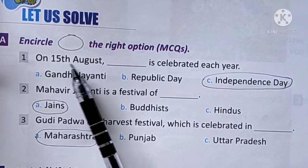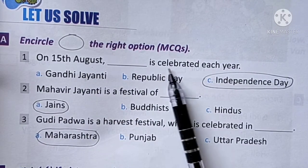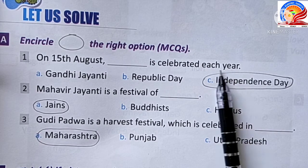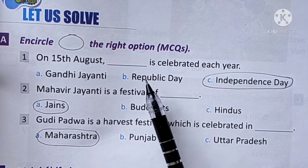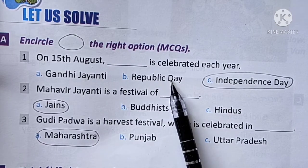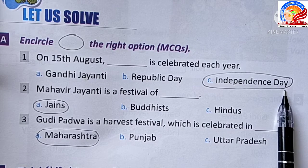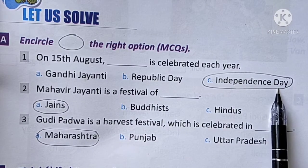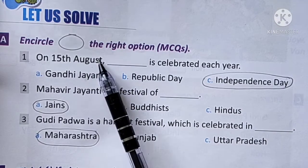On 15th August, what is celebrated each year? Options: Gandhi Jayanti, Republic Day, Independence Day. The correct answer is Independence Day, which is celebrated on 15th August.